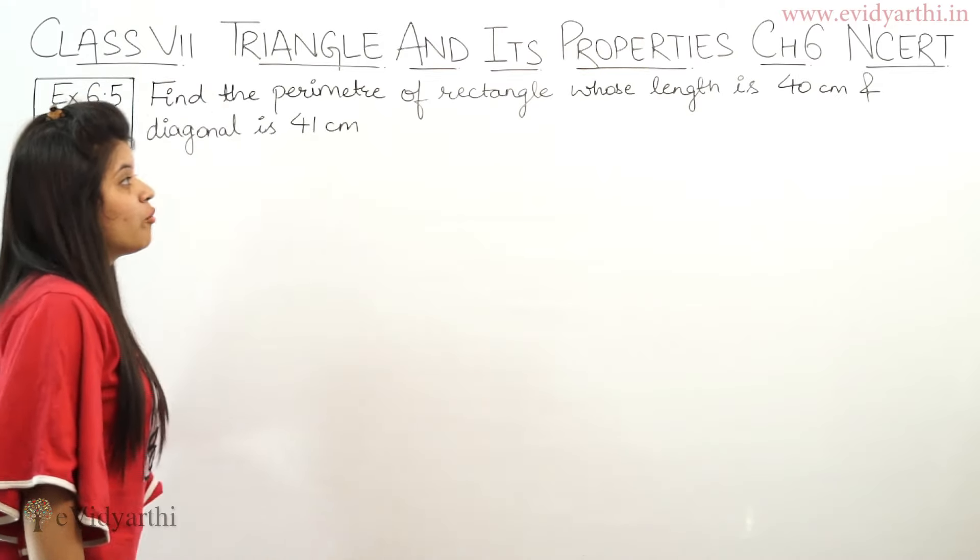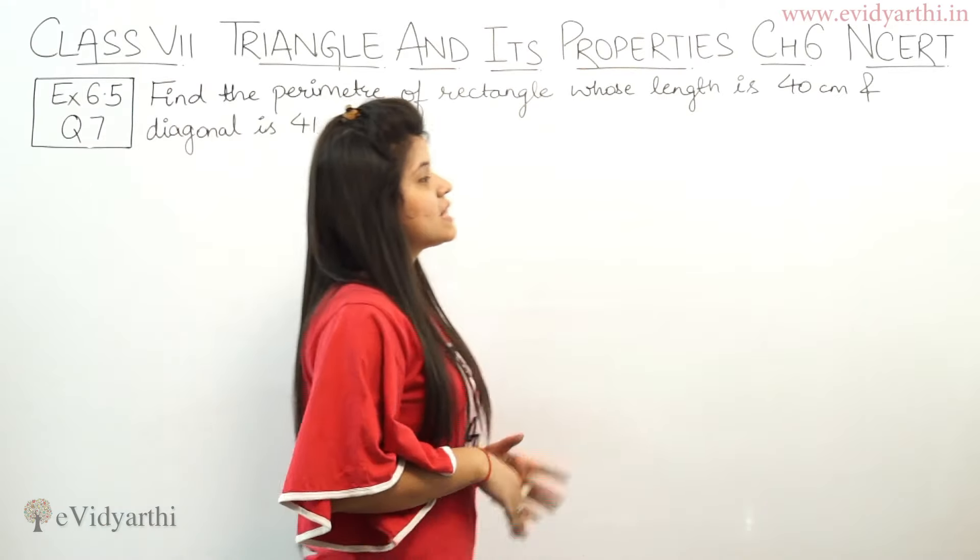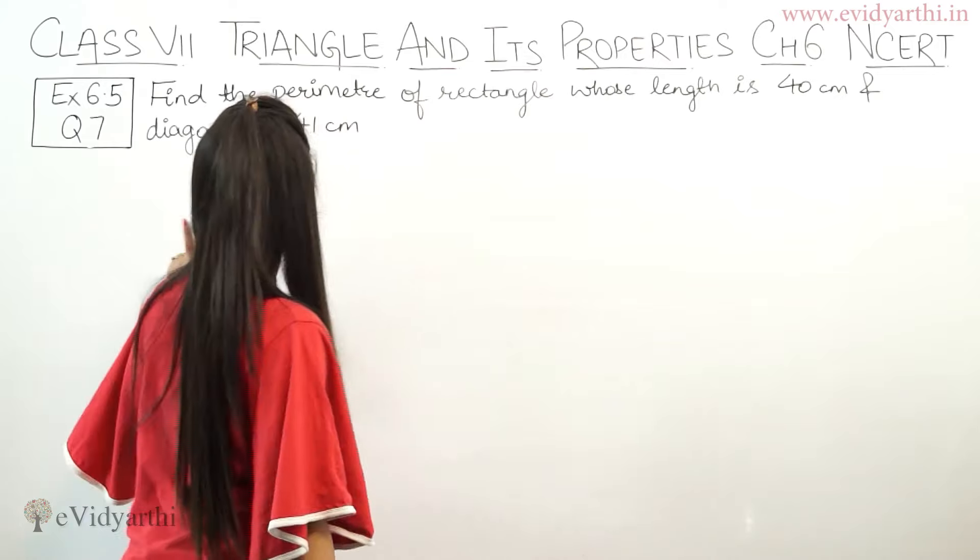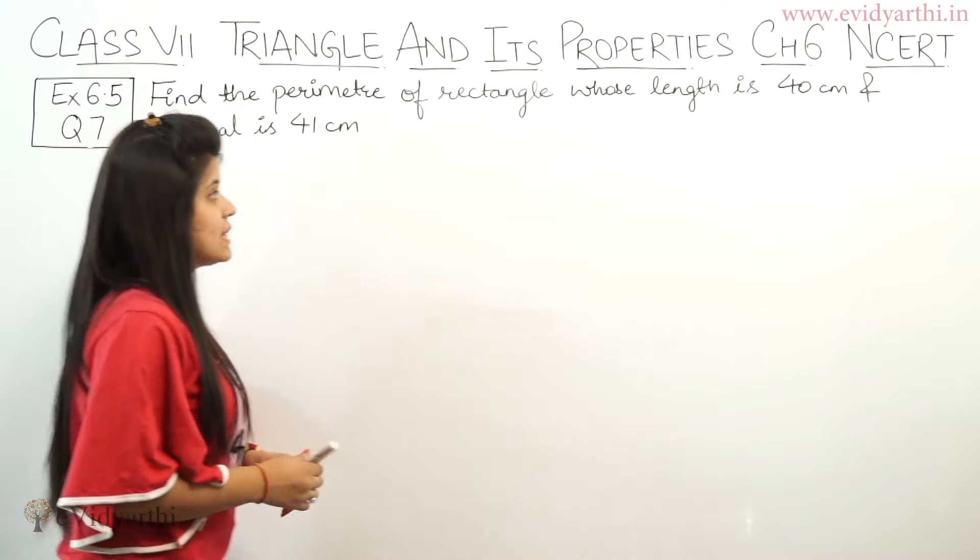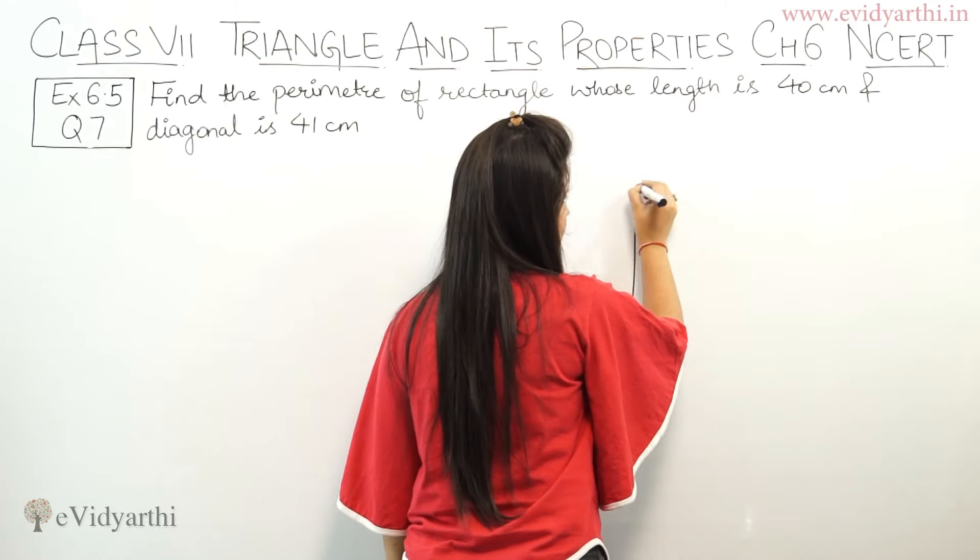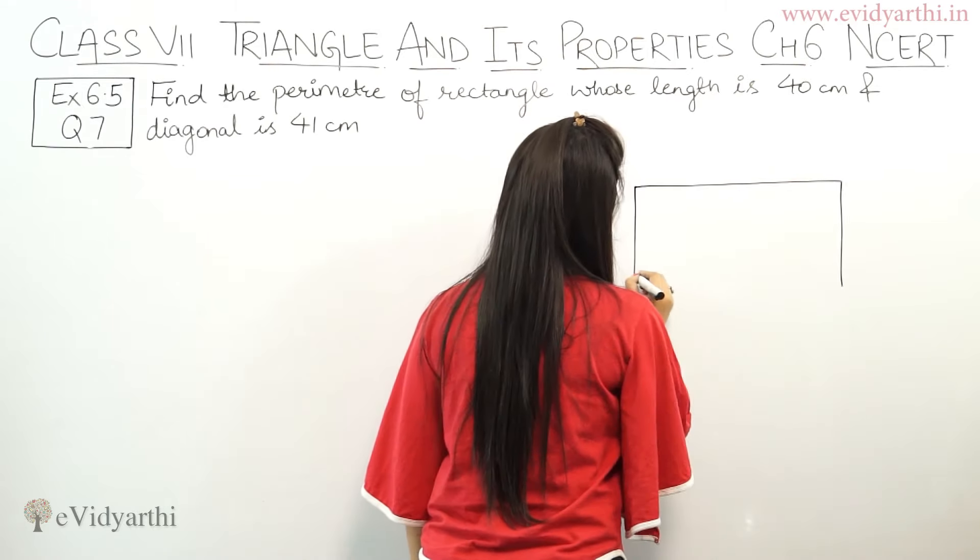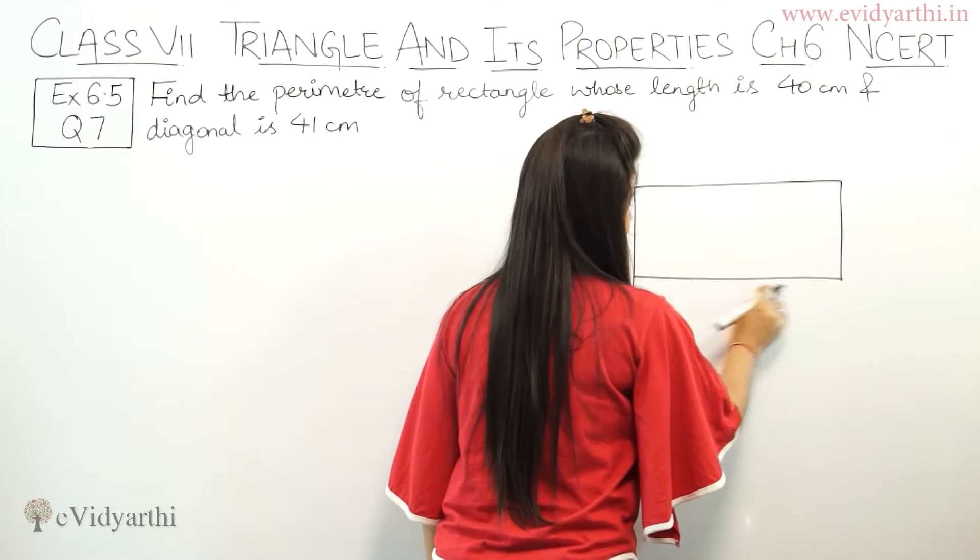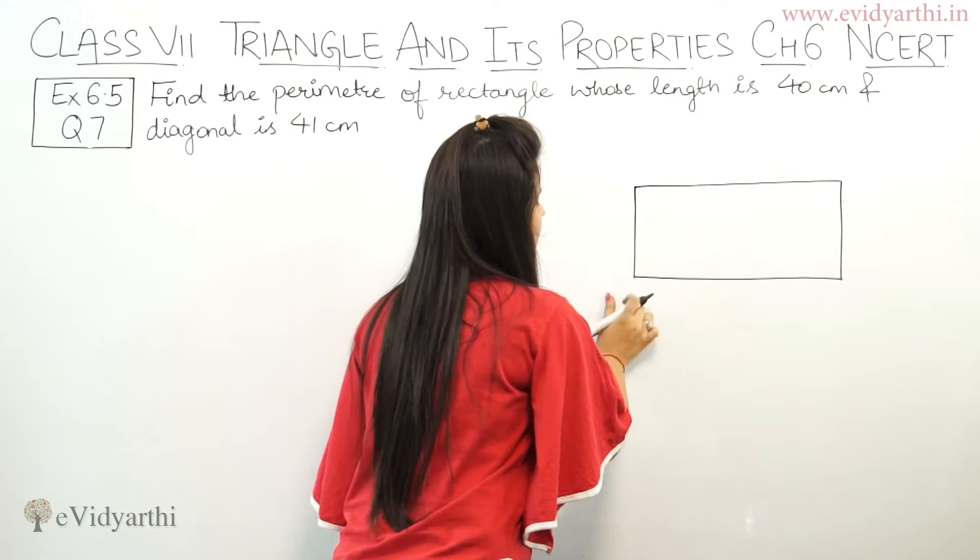Find the perimeter of rectangle whose length is 40 cm and diagonal is 41 cm. So you have to find the perimeter of a rectangle. First we will draw a rectangle. Suppose this is our rectangle. Now you have to find the perimeter of this.